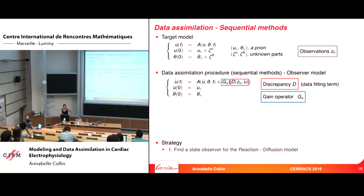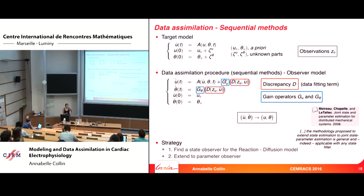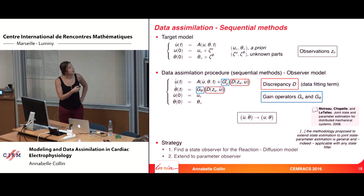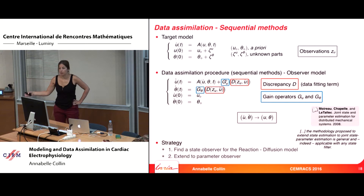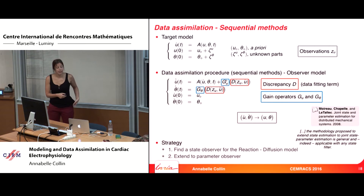You add a gain operator applied to the discrepancy, with the objective of decreasing the discrepancy over time — this corrects the state of your system. If you also want to estimate parameters (useful for patient-specific prediction), the idea is to add a dynamic on the parameters. The model part uses a gain operator different from the state gain, also applied to the discrepancy. The objective is for U-hat and theta-hat to converge to U and theta over simulation time.